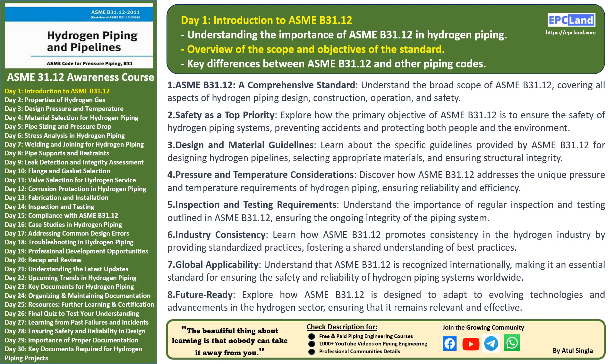ASME B31.12 also addresses the unique pressure and temperature requirements of hydrogen piping, ensuring that the system performs reliably and efficiently. Regular inspection and testing are emphasized to maintain the ongoing integrity of the piping, helping us catch potential issues before they become serious problems. Another key feature is its role in promoting industry-wide consistency, providing a shared understanding of best practices and creating a level playing field in the hydrogen sector. The influence of ASME B31.12 isn't limited to a single region — it's recognized internationally, making it a vital standard for ensuring safety and reliability of hydrogen piping systems worldwide.